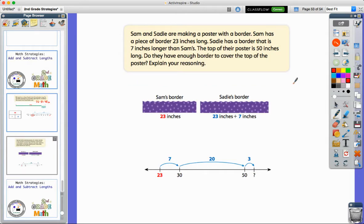So Sam and Sadie are making a poster with a border. Sam has a piece of border that's 23 inches long. Sadie has the border that is seven inches longer than Sam's. The top of their poster is 50 inches long. Do they have enough border to cover the top of the poster? Explain your reasoning. So there's a lot happening in this problem.